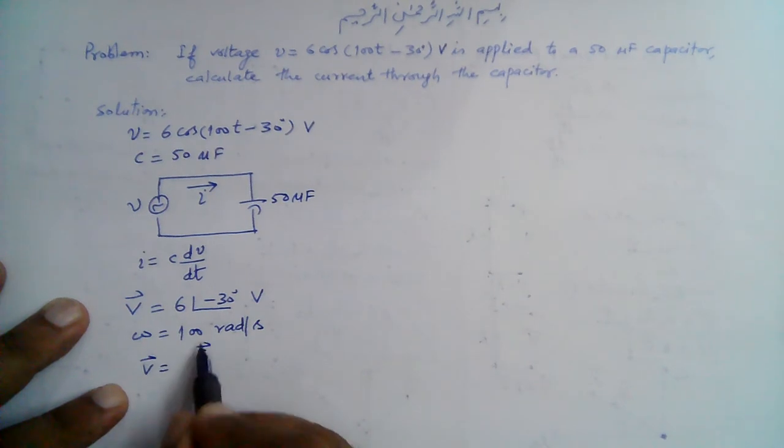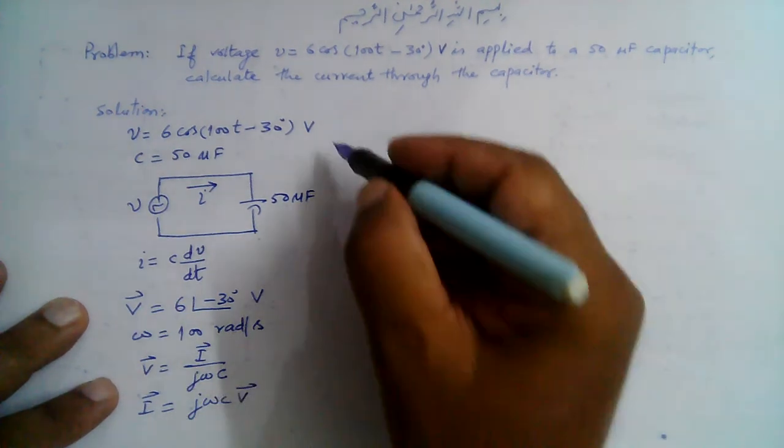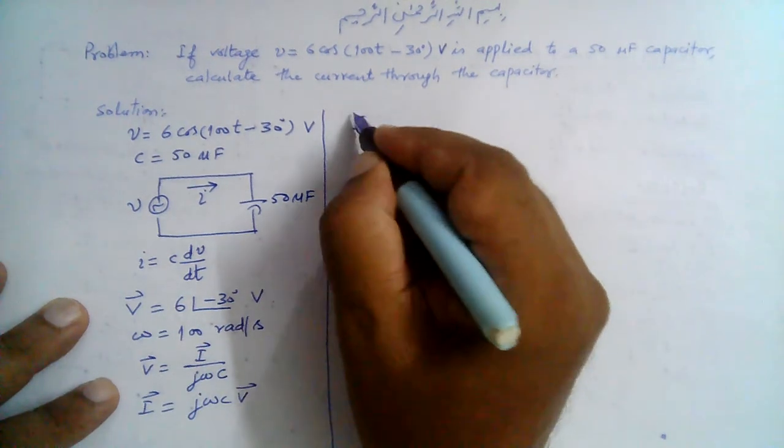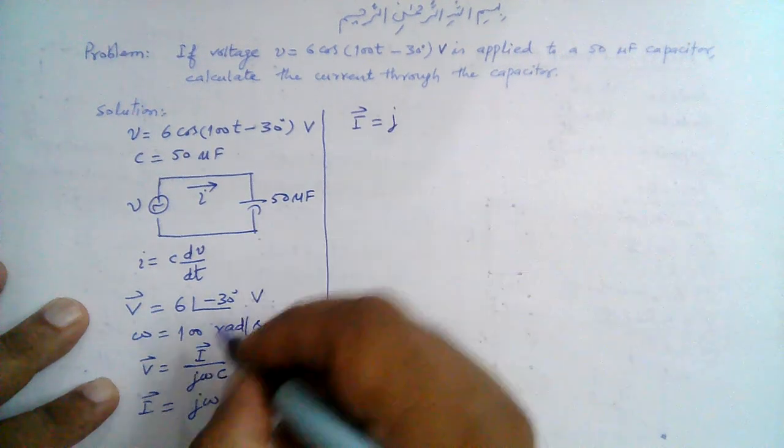We know that the phasor relationship for voltage and current through a capacitor is V = I/(jωC), or I̅ = jωC V̅. So we can use this relationship.